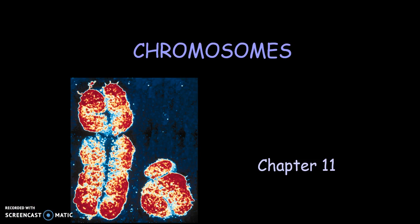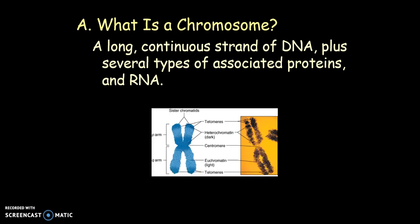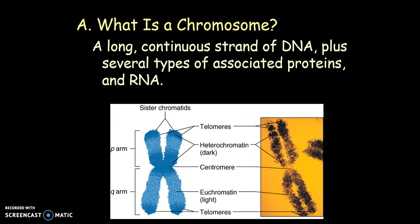We're going to continue our lesson on genetics, and this is the last type of problem. This deals with sex-linked traits. So just to review, we're going to talk about what a chromosome is. We learned about this when we talked about the cell cycle and meiosis. A chromosome is a long continuous strand of DNA plus the different proteins associated with it, plus RNA.